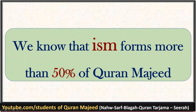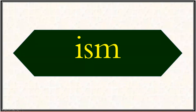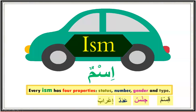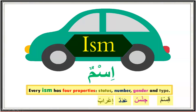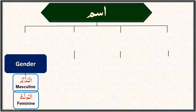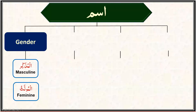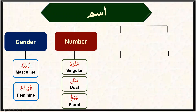Since ism forms more than 50 percent of the Quran, we will start our studies with the ism. Every ism has four different properties — like a car has four wheels and without any wheel the car cannot be driven — likewise we need to understand the four properties of an ism if we want to correctly identify and use it.